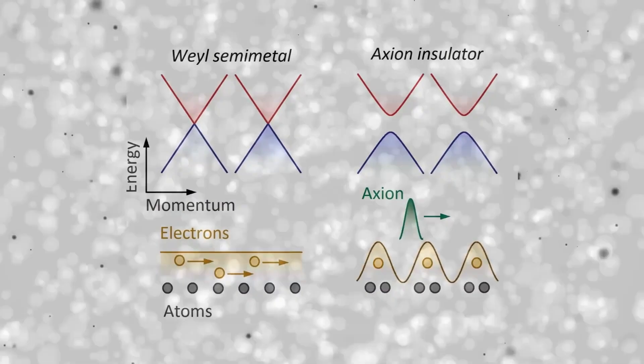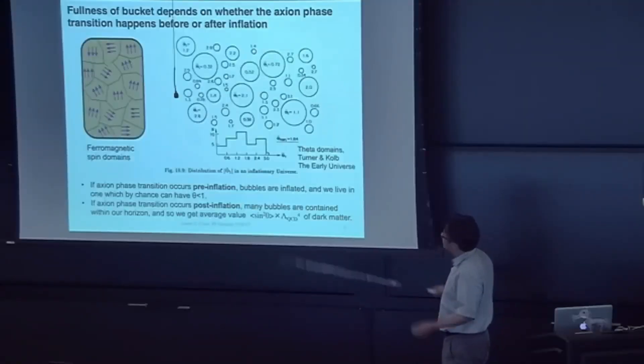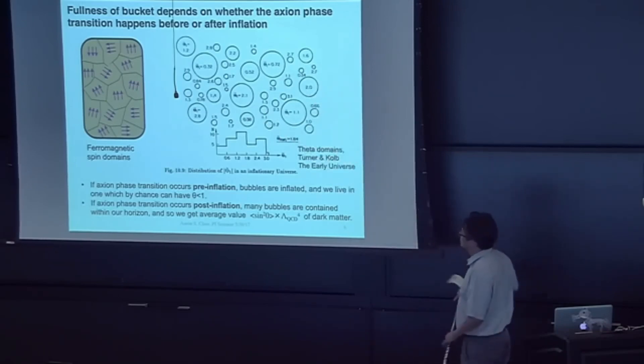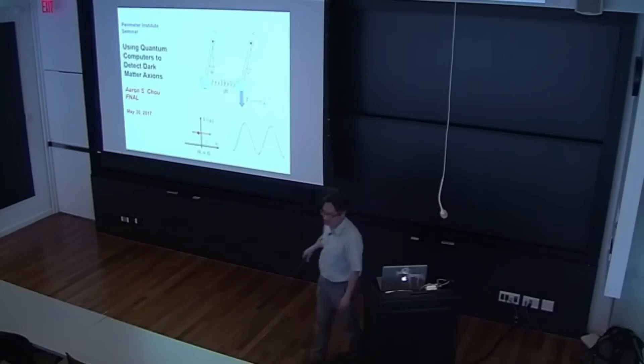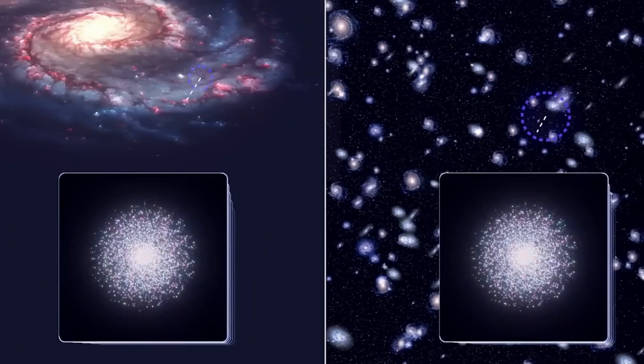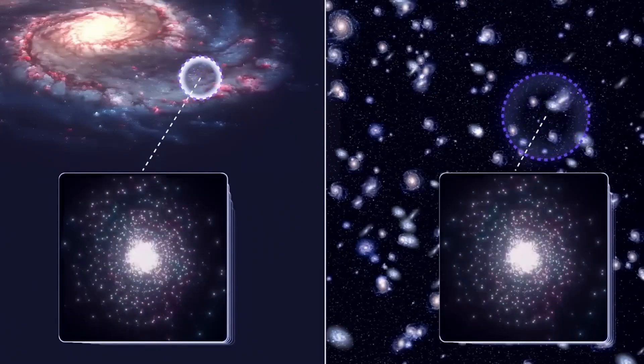Scientists have proposed countless theories to explain its existence, but one of the most compelling candidates is the axion, a hypothetical ultralight particle that could finally unveil the truth about dark matter.